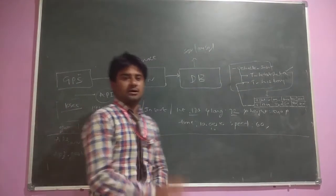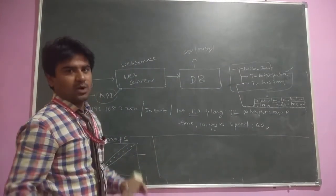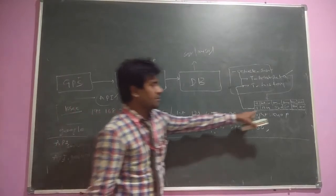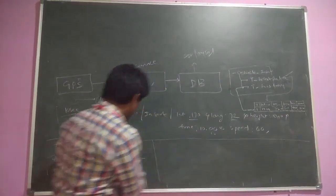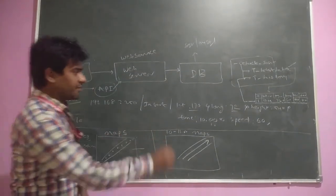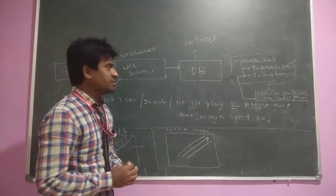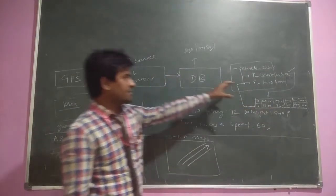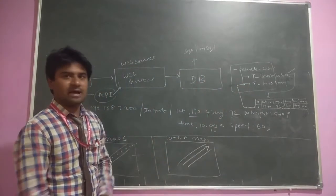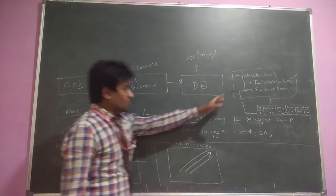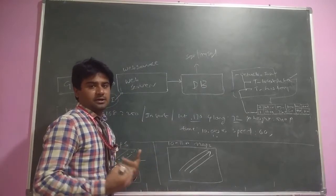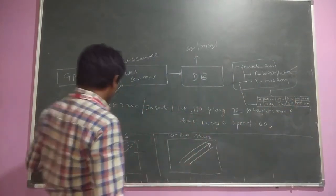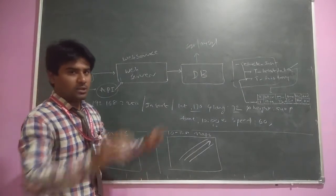If you want to track the whole day — not live location but the path over a specific time range, say from 10 o'clock to 11 o'clock — we can take all that data from the T_history table. We pass the latitude, longitude, speed, and time values to the Google API services, and it will plot all the path on Google Maps.